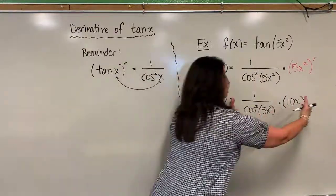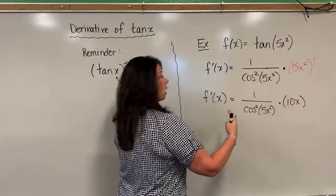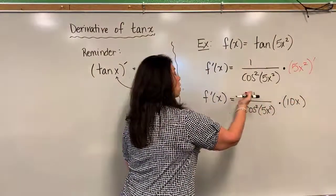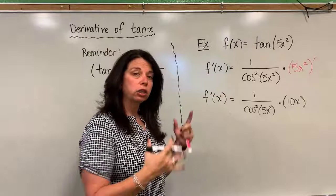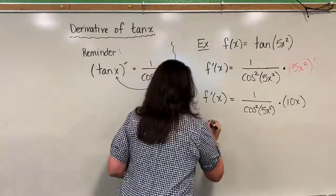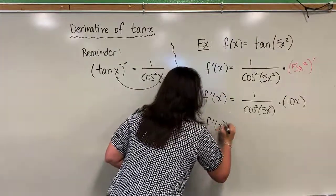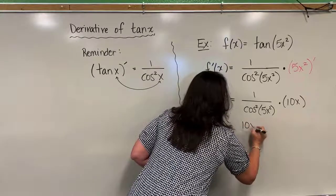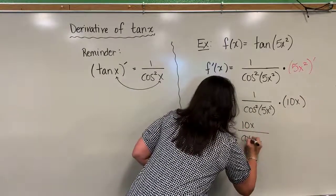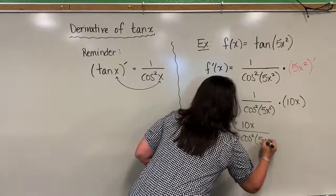And then what you could do, if you wanted to simplify a little bit, you can go ahead and put the 10X as the numerator in one fraction and kind of merge the two pieces together, and finally write it as f prime of X equals 10X divided by cosine squared 5X squared.